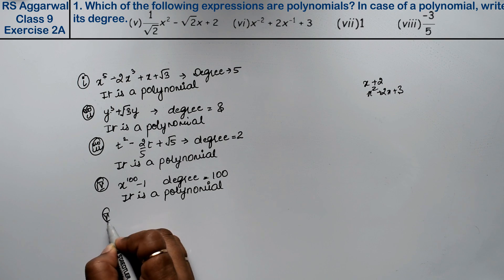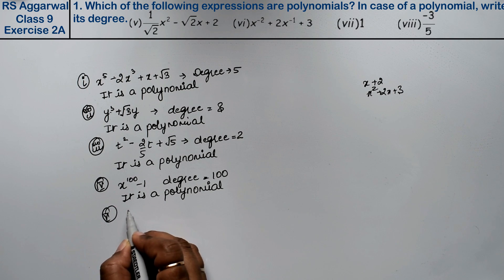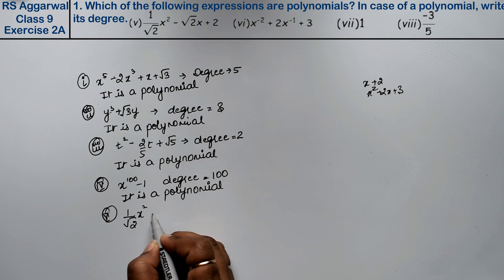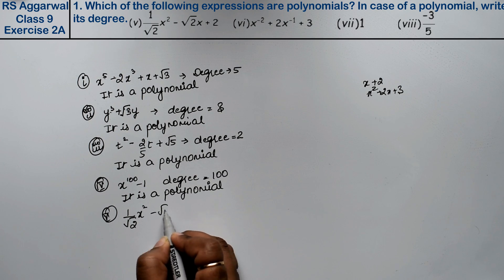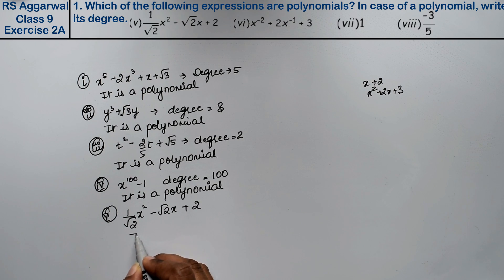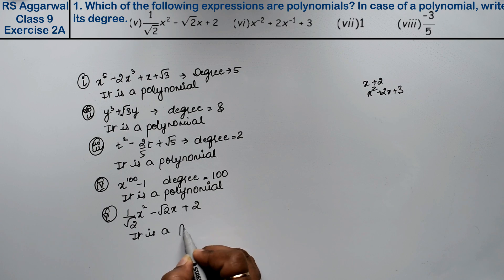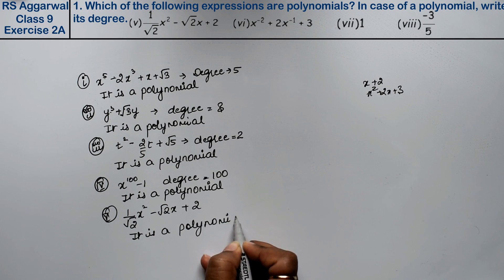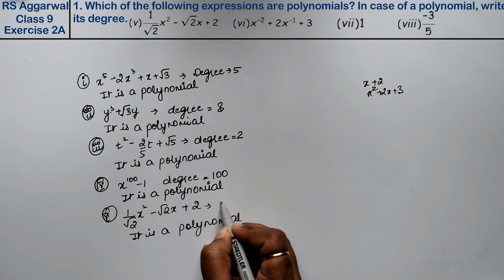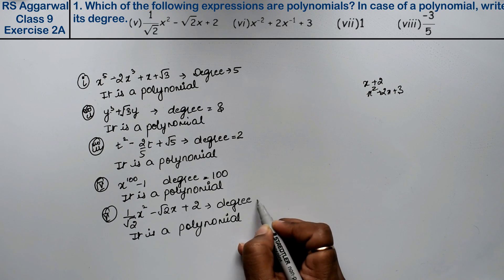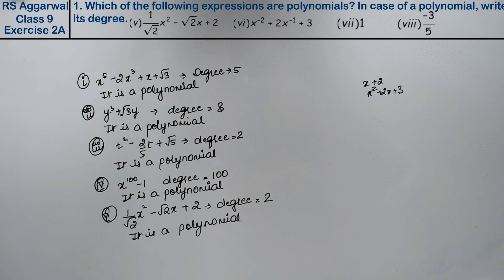Fifth part is (1/√2)x² minus √2x plus 2. It is also a polynomial, and the degree is 2.